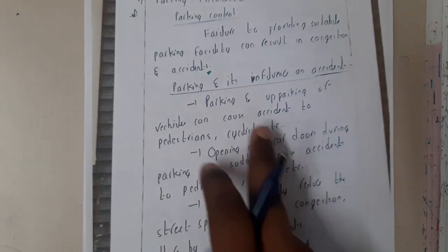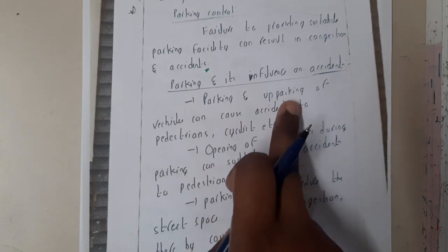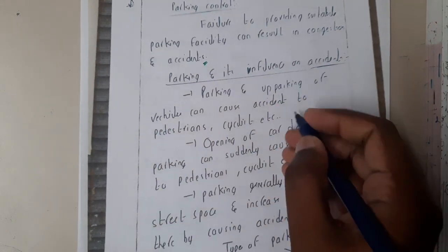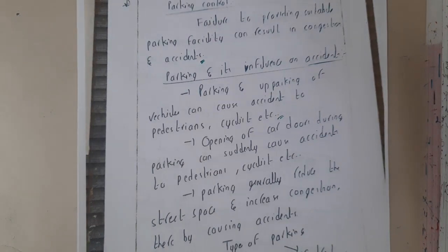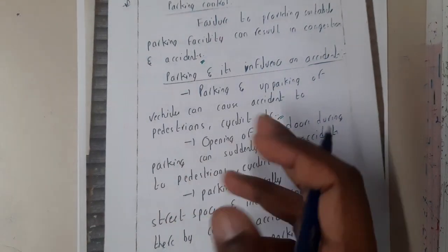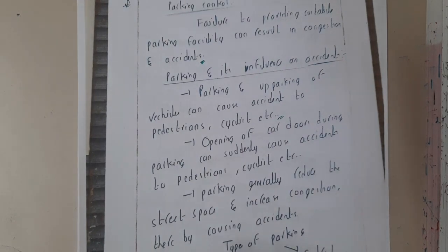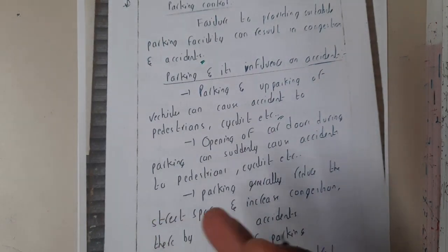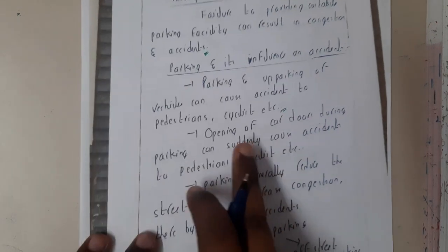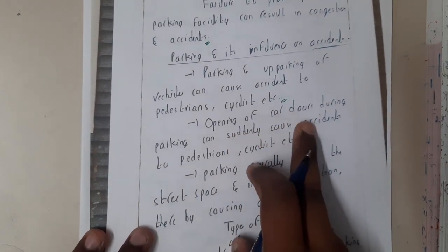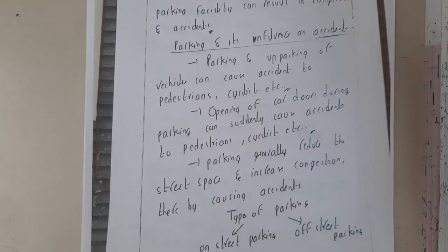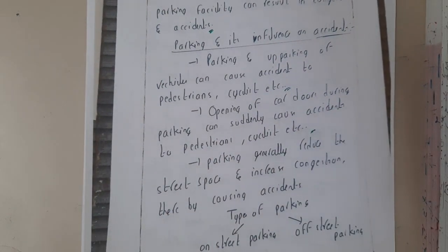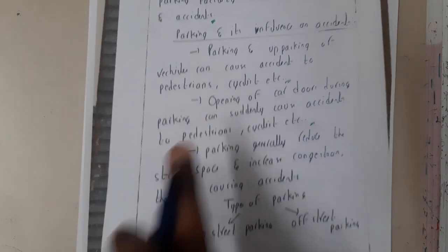Parking and unparking of vehicles can cause accidents to pedestrians and cyclists. As vehicles are parked beside the road and pedestrians are walking in that area, there is a chance that while taking a vehicle out of parking, an issue can occur. Similarly, opening a car door during parking can suddenly cause an accident to pedestrians — if someone suddenly opens their door, a passing person might be hit.